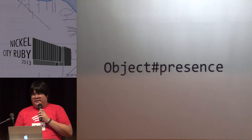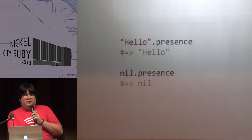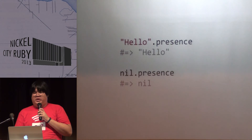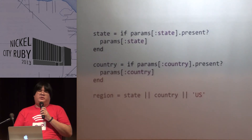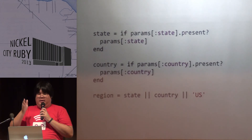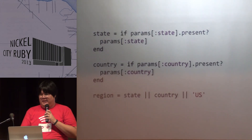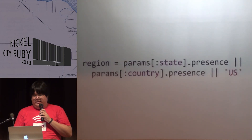Next thing is object presence. This method is actually going to return itself if it's not nil. This is useful so you can chain this method without having to write an if-present check — because you cannot chain an empty string using the double-pipe operator. With presence you can rewrite the conditional into a cleaner chain.